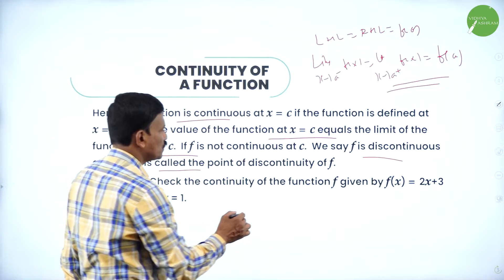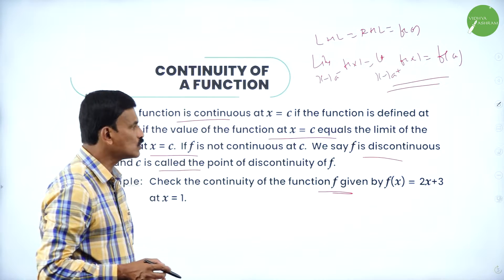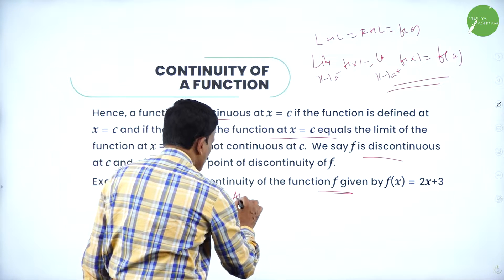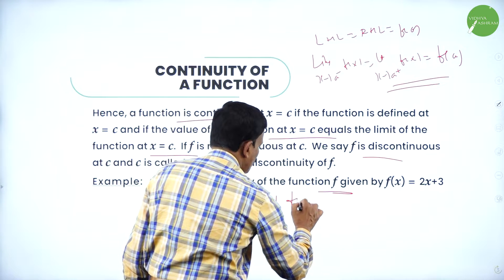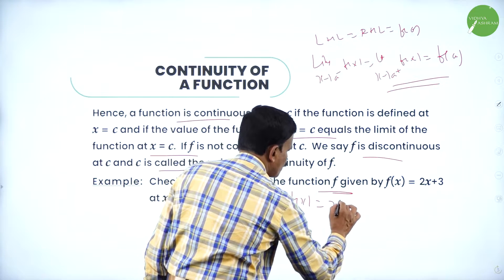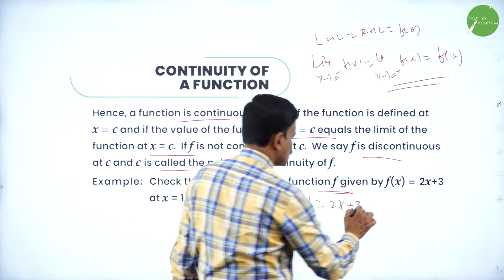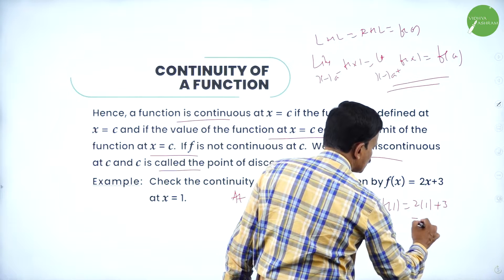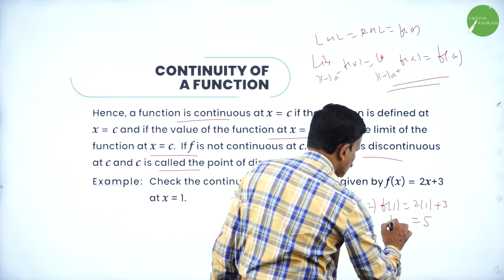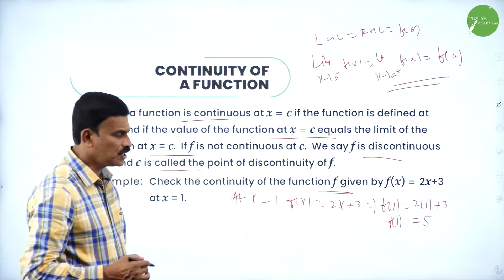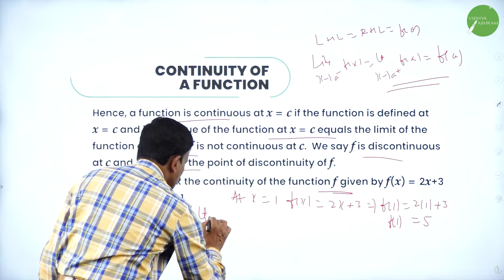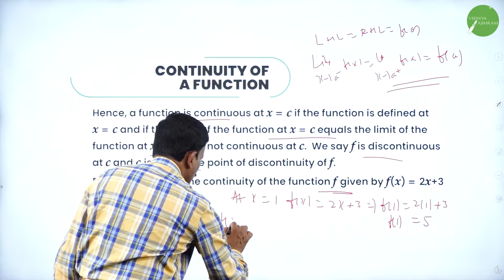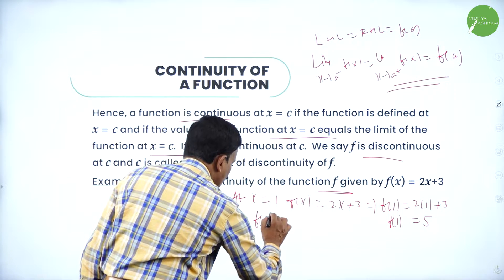Let us take a small example. Check the continuity of the function f(x) = 2x + 3 at x = 1. At x = 1: f(1) = 2(1) + 3 = 5. So the functional value is 5. According to the definition, limit as x→1 of f(x) should equal f(1).